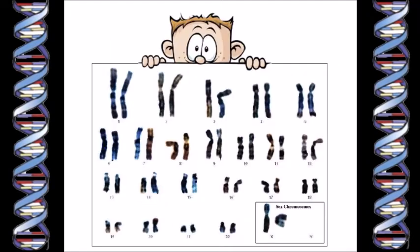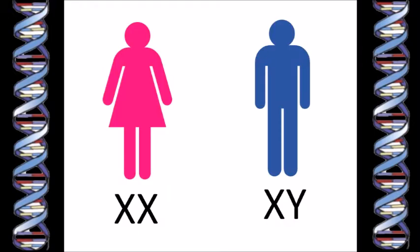Human beings have 23 pairs of chromosomes, 22 ordinary pairs, and one pair of sex chromosomes. In humans, females have two X chromosomes, and males have one X and one Y chromosome.